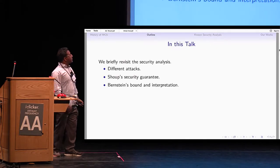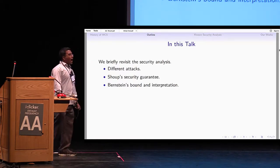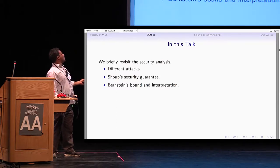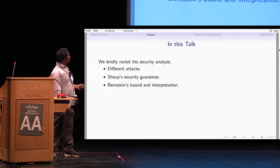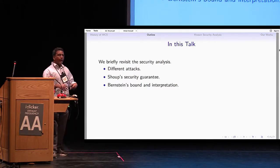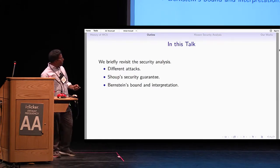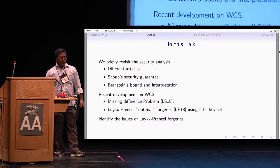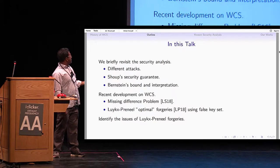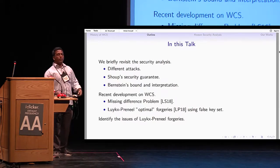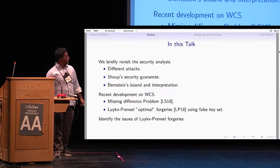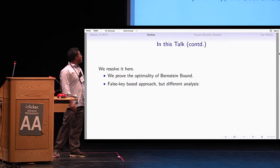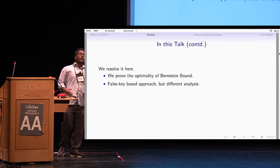In this talk, I will discuss different attacks and security analyses of the Wegman-Carter-Shoup authenticator. Shoup gave an analysis; Bernstein gave a bound, and we'll interpret that bound. There are recent developments: one paper addresses the missing difference problem, and the other — our main focus — is the Lucks-Pinnets forgeries. We identify issues in their forgery, resolve them, and prove the optimality or tightness of the Bernstein bound.